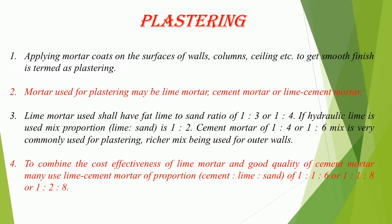Lime mortar used shall have fat lime to sand ratio of 1:3 or 1:4. If hydraulic lime is used, mix proportion of lime to sand is 1:2. Cement mortar of 1:4 or 1:6 mix is very commonly used for plastering, with richer mix being used for outer walls.